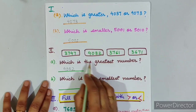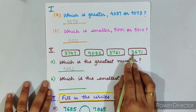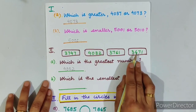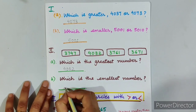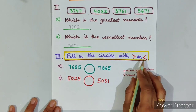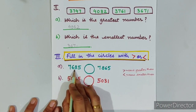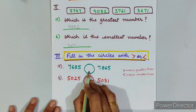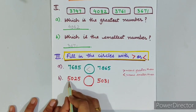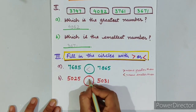Which is the smallest number? Comparing the remaining three numbers starting with 3, we look at the 100's place: 7, 7, and 6. The smallest digit is 6, so the smallest number is 3,671. Fill in the circles with greater or lesser sign. This sign means greater than and this sign means smaller than. So 7,685 is smaller than 7,865. And 5,025 is smaller than 5,031.